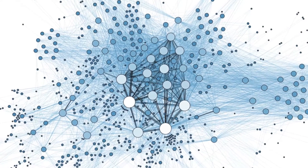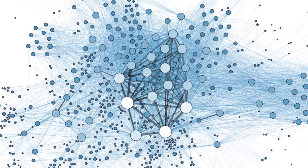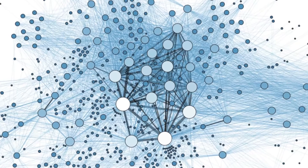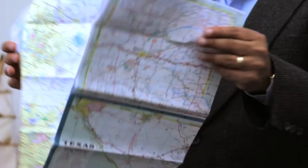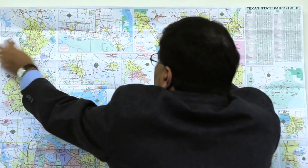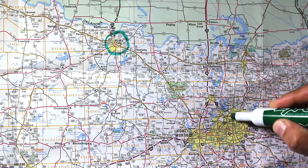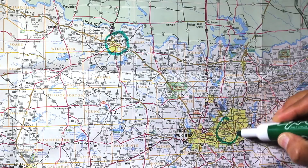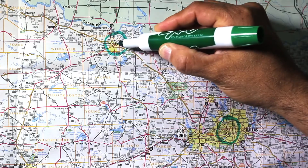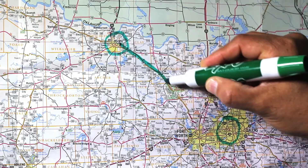A graph is a model of data which has nodes, which are entities, and edges between these nodes. Edges represent some relationship between these underlying entities. Maybe the simplest example of a graph that we're all familiar with is a highway map. In a highway map, the nodes are the cities, and the edges are the routes, or the highways, connecting different cities.